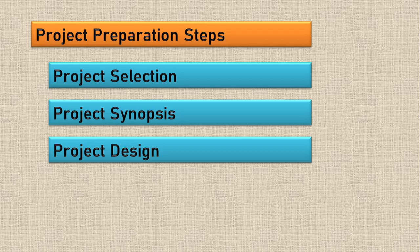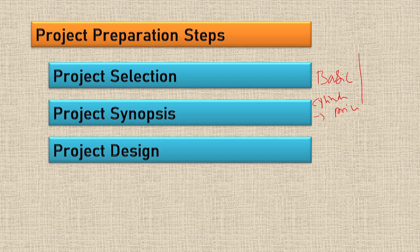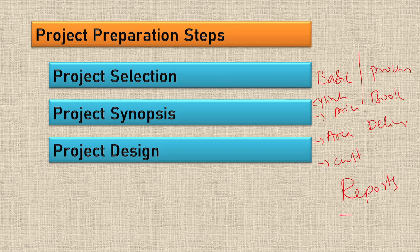Project design: first you need to design the project - what are the input forms, what are the basic forms required. Basic entries include cylinder price, area names, and customer details. For the processing stage, we have booking and delivery. Based on that you need to generate reports - generally a booking list showing what bookings were done, and a delivery list on a day-to-day basis that you can print out and give to the employee to go deliver the cylinders.